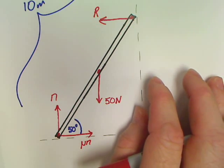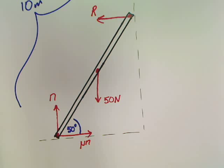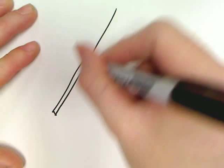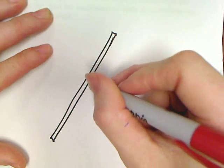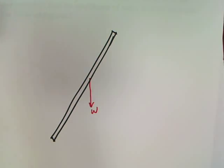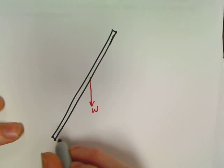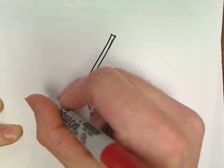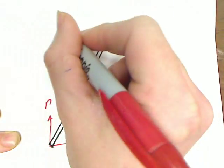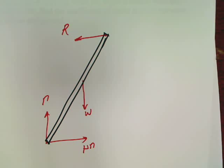This is your basic ladder, which basically I'm implying to you right now: if you see a ladder problem, do this automatically. The second you see it's a ladder question, draw your ladder. Dead in the center of the ladder you'll probably have a weight on that ladder. Automatic. You will probably have at the bottom a mu n, you will have an n, and you will have an R, a reaction force from the wall. That is your basic every single ladder question.